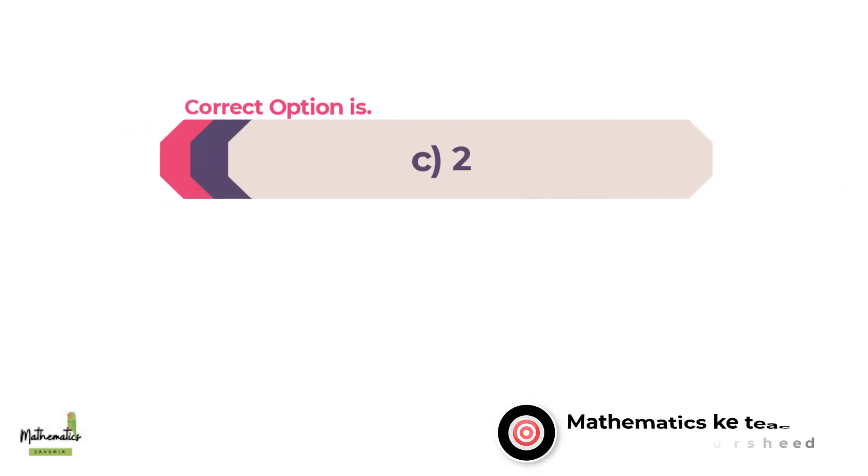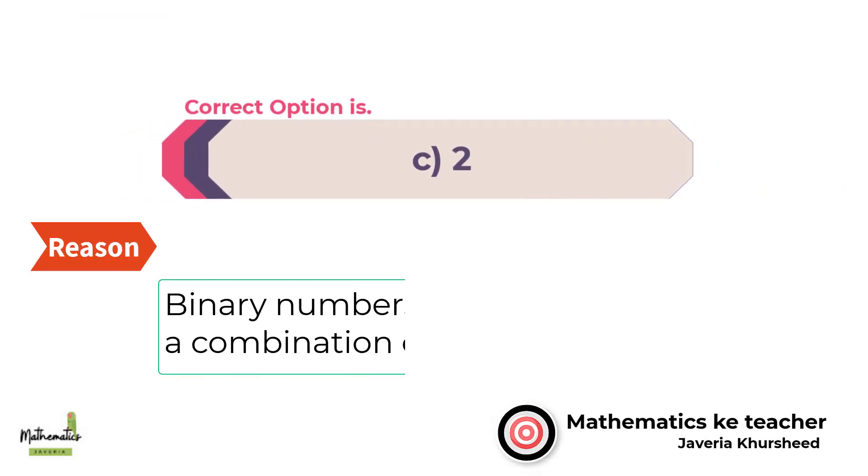Correct option is C, 2. Because binary numbers are formed with a combination of 0 and 1 only.